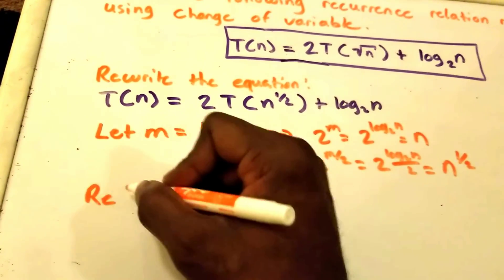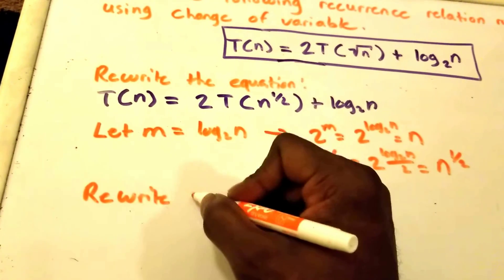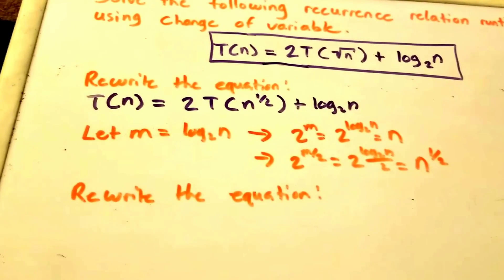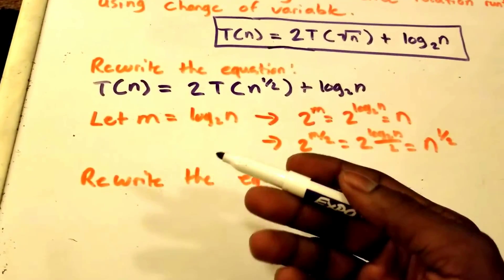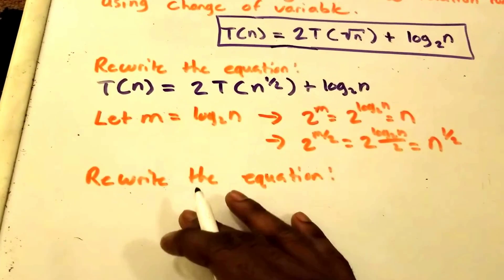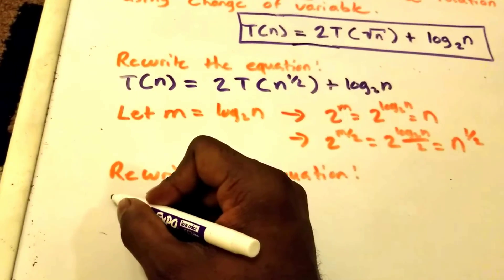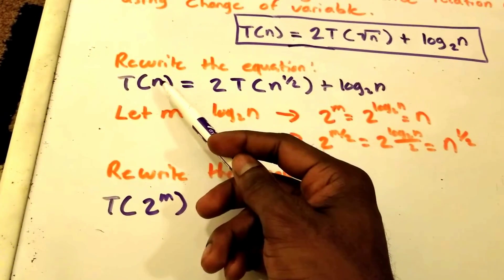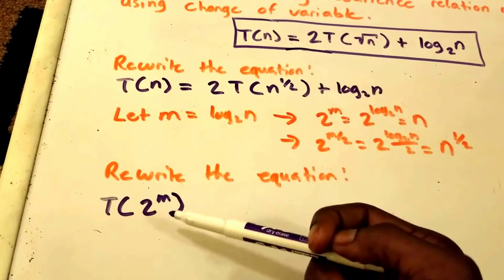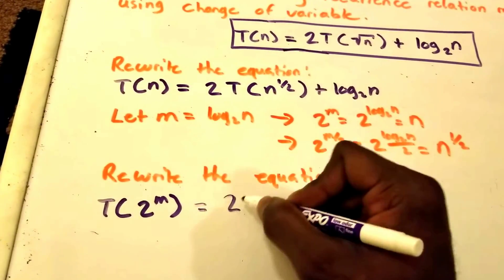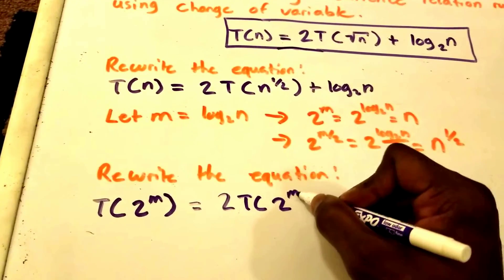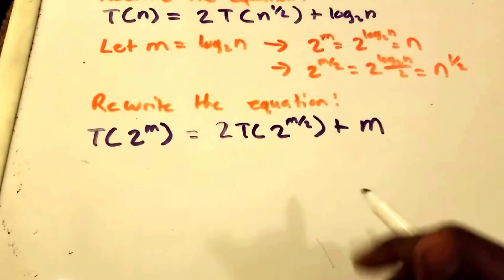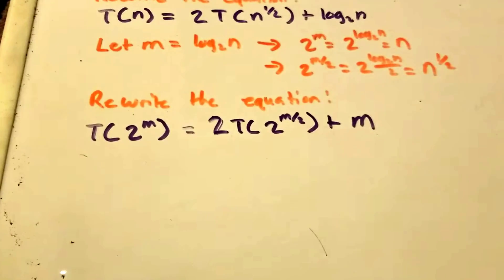Let's rewrite our equation, substituting the variable m for all of our n variables. We get T(2^m) — because n is equivalent to 2^m — and this equals 2·T(2^(m/2)) + m. So the log₂(n) term has simply become m.